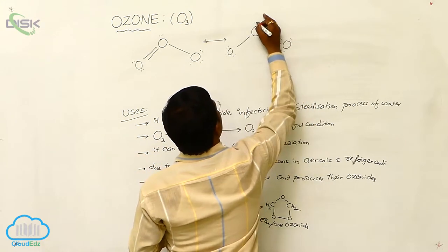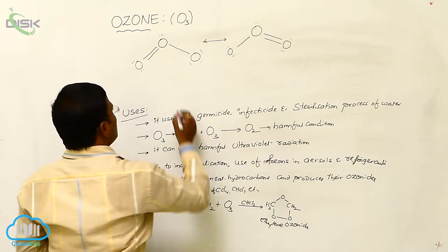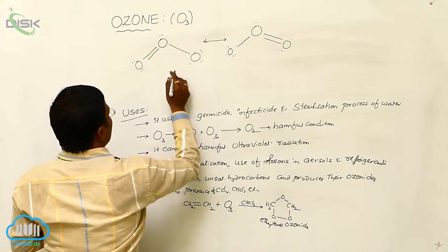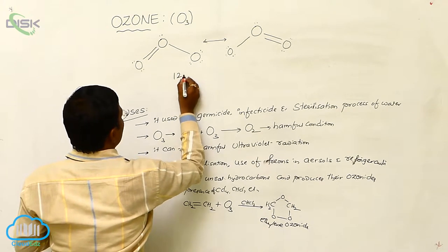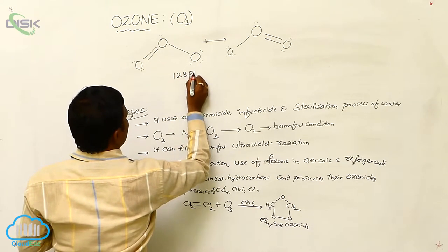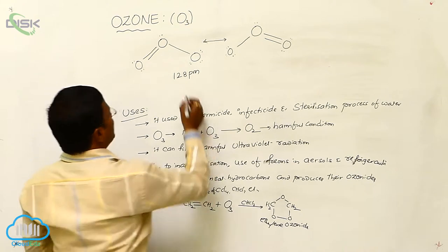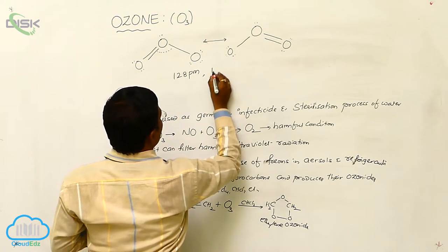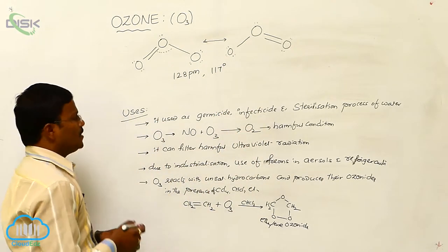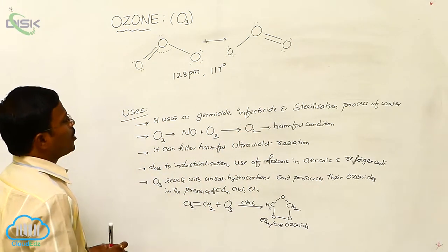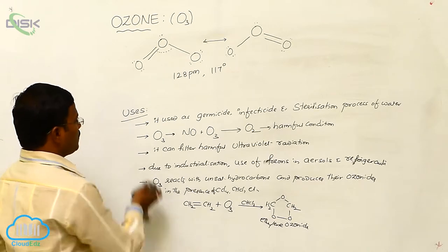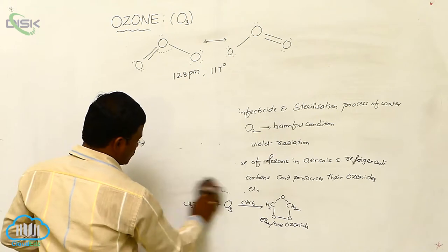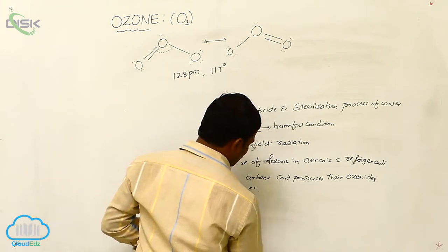In the resonance structure, there is a double bond O arrangement again, with single-bonded oxygen having three non-bonding pairs of electrons. The distance between oxygen atoms is nearly 128 picometers, and the O-O-O bond angle is 117 degrees.